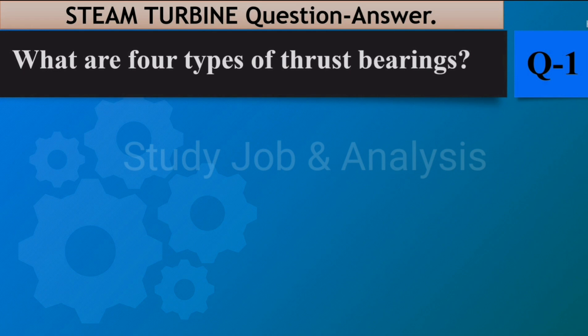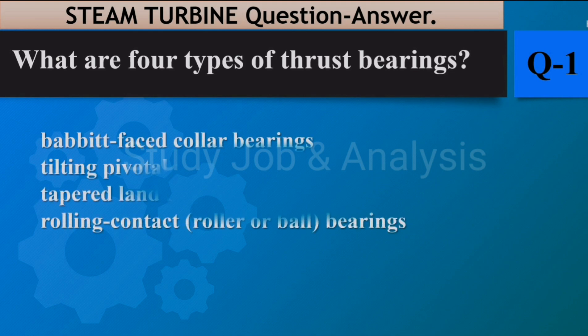Question number one: What are four types of thrust bearings? Answer: Babbitt-faced collar bearings, tilting pivotal pads, tapered land bearings, and rolling contact roller or ball bearings.